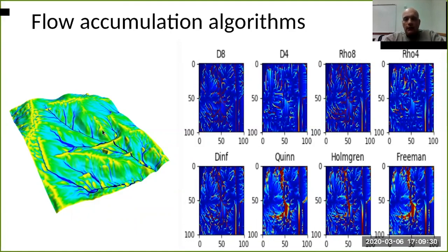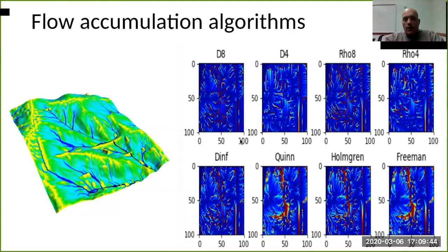They can have slight differences according to whether you have single-direction flow — the water goes in only one direction — or whether it is spread also into other pixels. According to the difference in flow accumulation algorithm used, you can have a slightly different presence of channels.